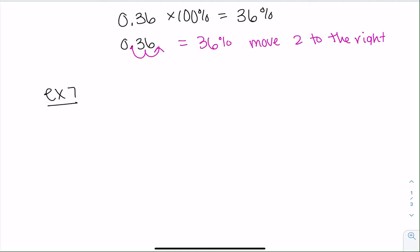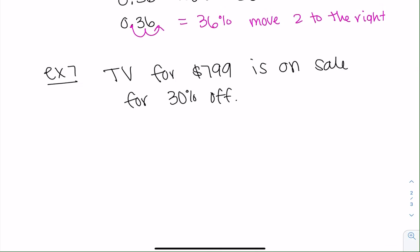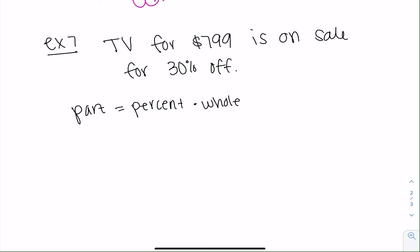Example 7, which was a TV for $799 is on sale for 30% off. And now we want to find the price after including the discount. So I noticed the percent's given, so I'm probably going to use the part equals percent times whole. But before we can use this formula, we need 30% in decimal form. So up to you. You could do 30 over 100, and you'll get 0.3 on your calculator.